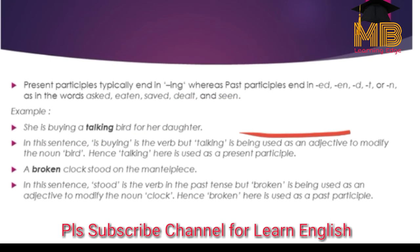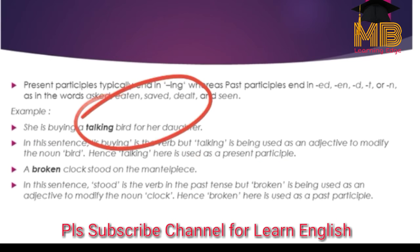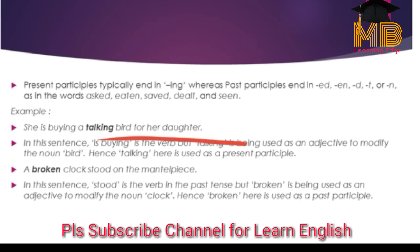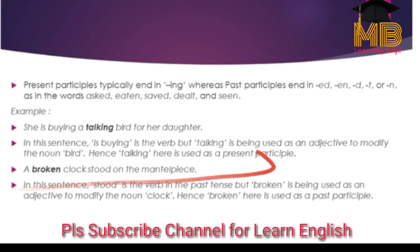For example: 'She is buying a talking bird for her daughter.' Here, 'is buying' is the verb. But 'talking' is being used as an adjective to modify the word 'bird' — what kind of bird is it? It is a talking bird. Hence, 'talking' is used as a present participle.